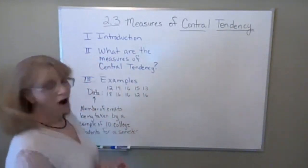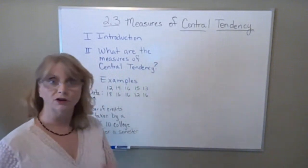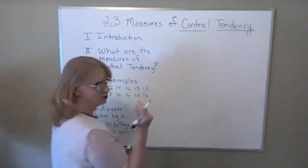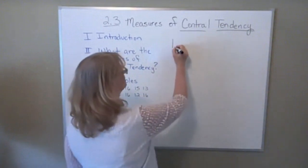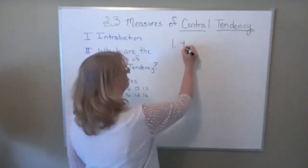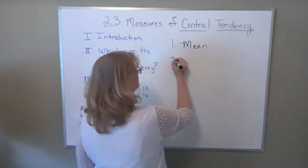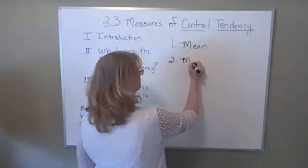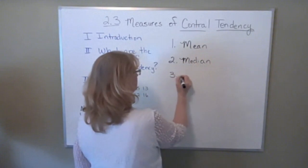What are these measures of central tendency? There are three of them, and they all start with M. Our three measures of central tendency are mean, median, and mode.